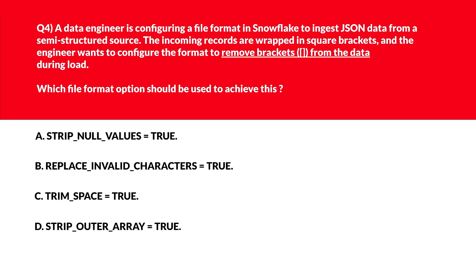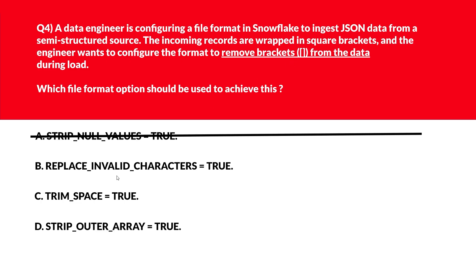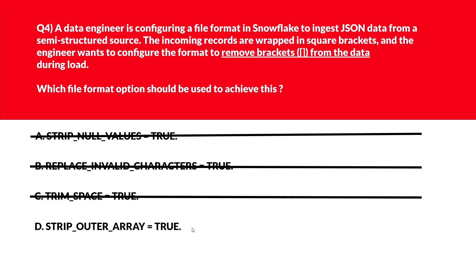This question is about file format — we need to remove the square brackets from the data during loading. Option A says strip_null_values = true — this removes fields with null values but does not affect array brackets, incorrect. Option B says replace_invalid_characters = true — this substitutes unsupported characters but does not modify array brackets, eliminated. Option C says trim_space = true — trim_space removes extra spaces, as the name suggests, but does not affect array brackets in JSON data, wrong answer.